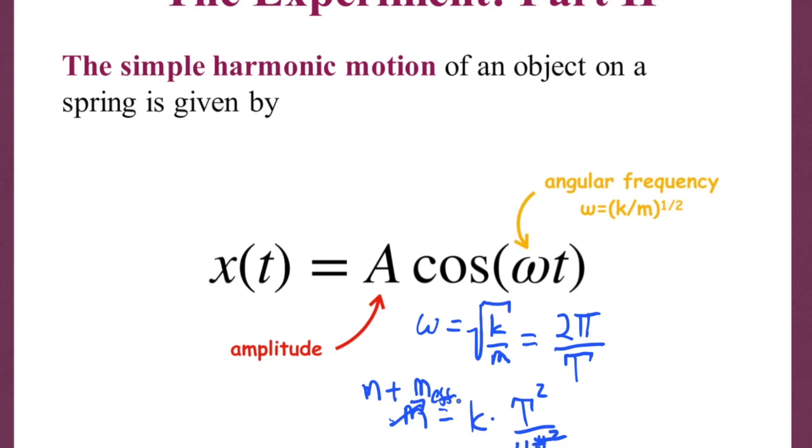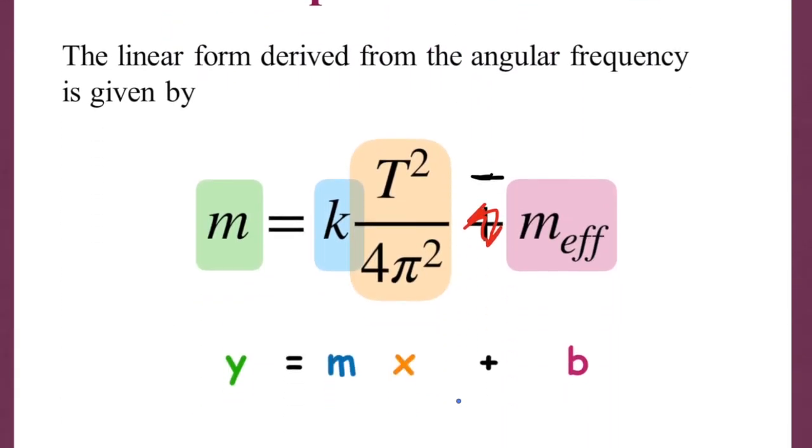And if we do that we get a nice linear relationship here where I can write down the mass is my y variable, the x variable is t squared over 4 pi, the slope of the relationship is k, and then the offset is the effective mass of the spring. So this is ultimately what we want to go ahead and measure. We know how to measure the masses by just looking at their values, but how are we going to go ahead and measure the period of the system t?